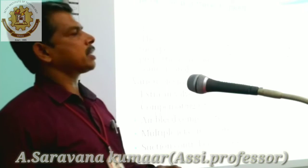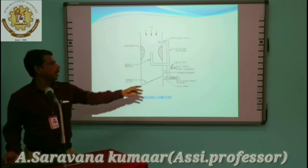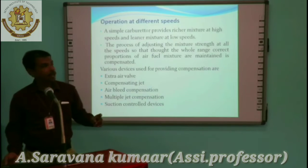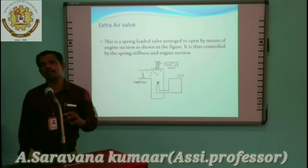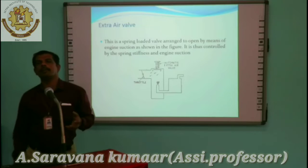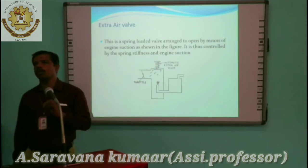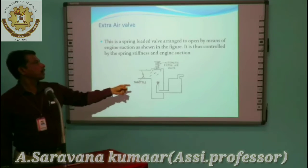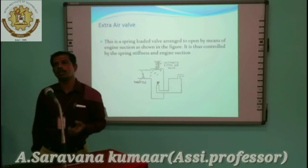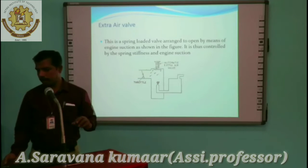A simple carburetor provides a richer mixture at high speeds and a leaner mixture at low speeds. To compensate, an extra air valve is provided. When only excess fuel is delivered in the cylinder, it is a problem for the engine. So the air-fuel mixture must be maintained at a constant level. A spring-loaded valve is arranged to open by means of engine suction, controlled by spring stiffness. Due to the engine suction effect, the valve opens and a high amount of air enters into the cylinder.